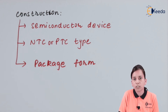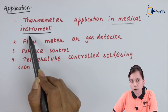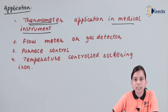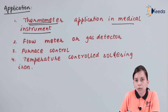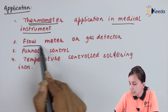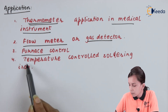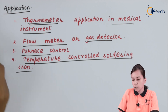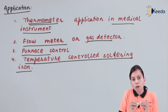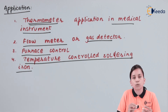Now let us look at the applications of the thermistor. The thermometer is a major application in medical instruments. A thermometer converts the temperature of the human body into a visible form of energy — for example, in a digital thermometer. Other applications include flow meters, gas detectors, furnace control, and temperature-controlled soldering irons. Whenever a system is designed around temperature, it always consists of a temperature transducer, which is nothing but a thermistor.